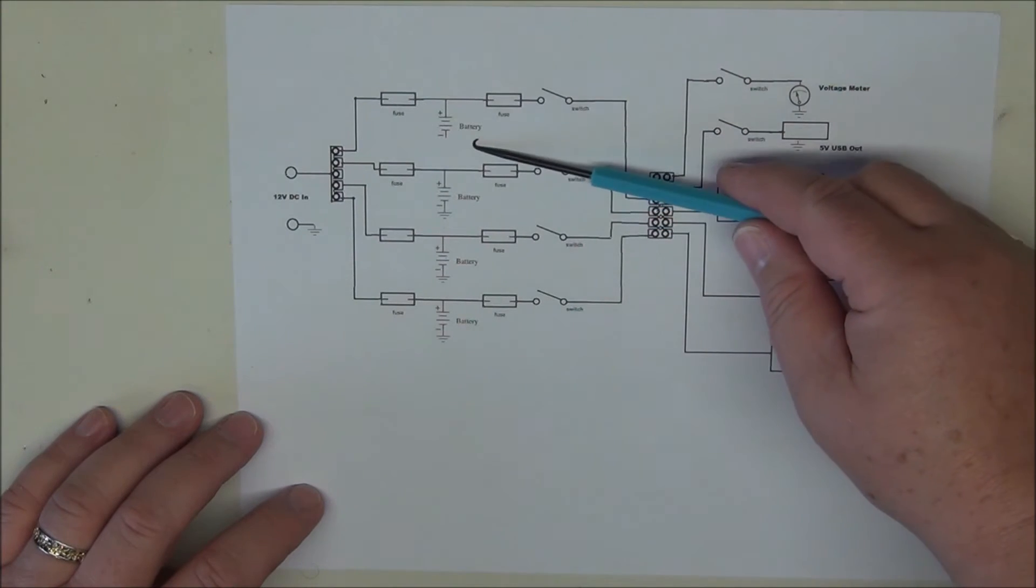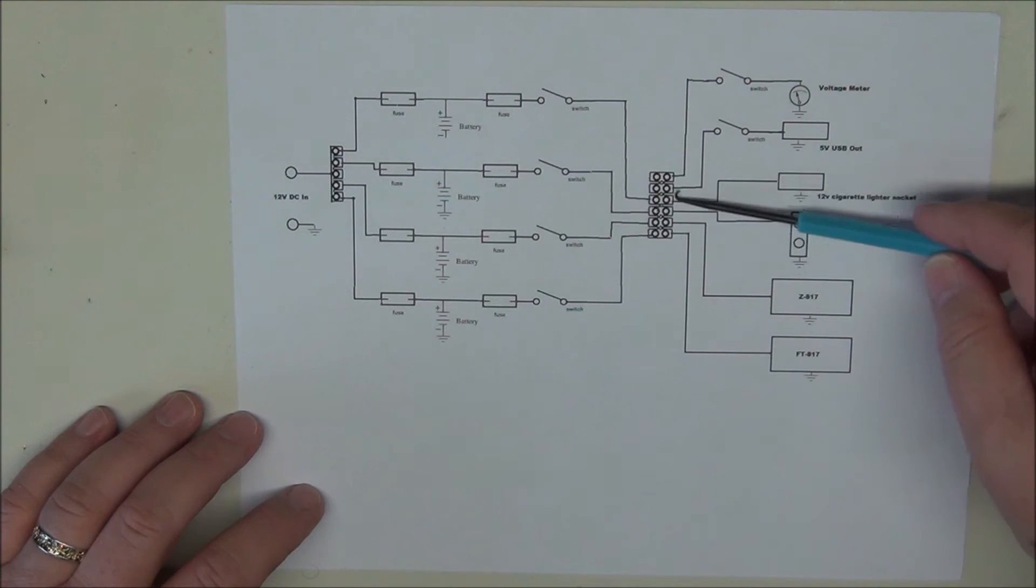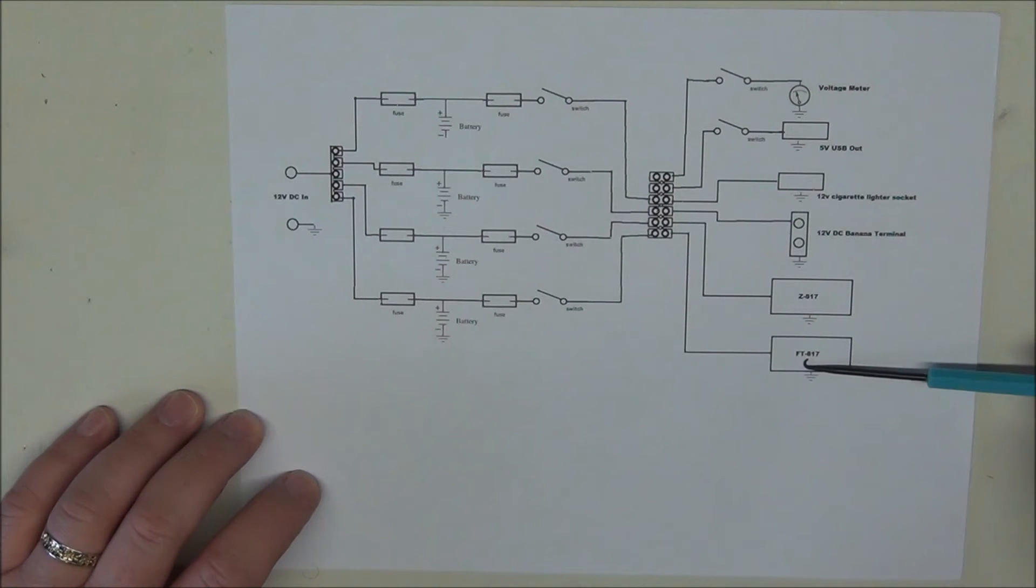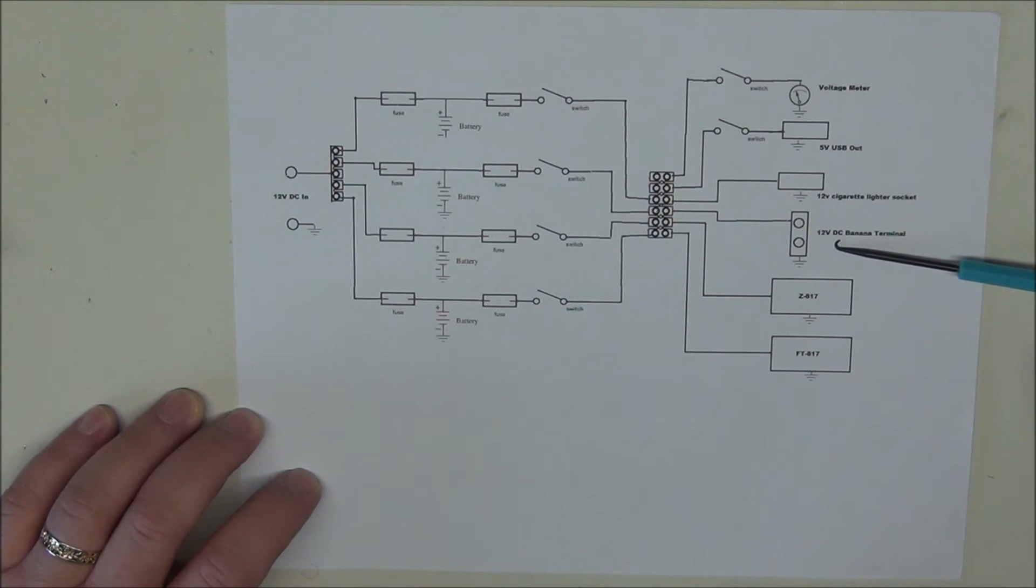Additionally, if one of these batteries goes bad and we need to pull it out of the circuit we can lift this fuse. We'll have another terminal block. From the terminal block we'll be powering the FT817. We'll also be powering the Z817. And if you haven't seen a modification for adding a 12 to 6 volt regulator into the Z817 you might want to watch that. At the top of the outside of the panel I'm going to be adding for additional accessories to run on the battery, 12 volt DC banana terminals. I'm going to have a 12 volt cigarette lighter socket.